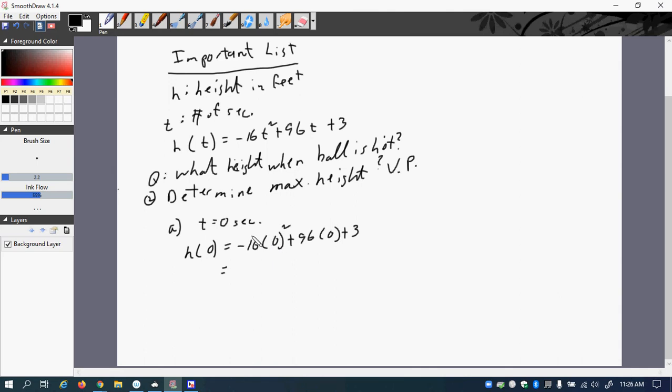And so 0 squared is 0 multiplied by negative 16 is 0. 96 times 0 is 0 and then plus 3. So h of 0 is 3. So this is 3 feet in 0 seconds.